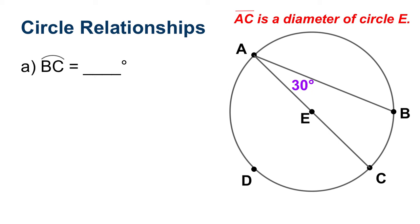So we've got an inscribed angle here that is angle B, A, C. We're going to try to figure out how big the corresponding arc is for that. So if we're talking about angle B, A, C, the corresponding arc there is B, C, and the relationship between an inscribed angle and its arc is that you have to double the angle to get the arc. So if I double 30, I get 60.